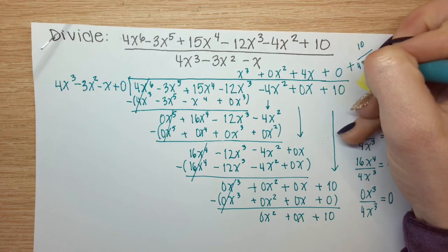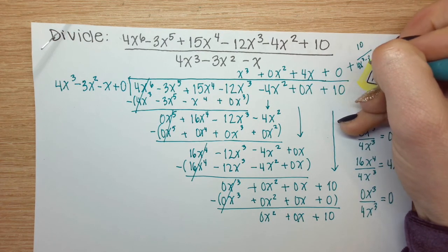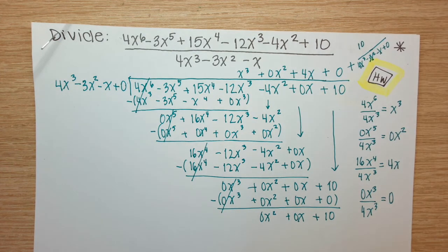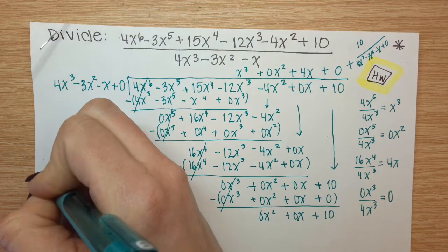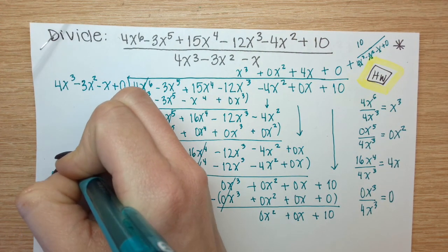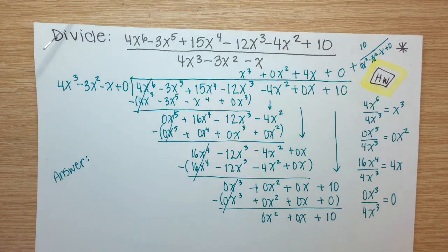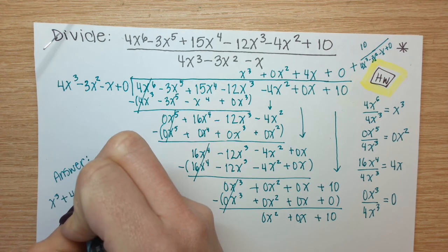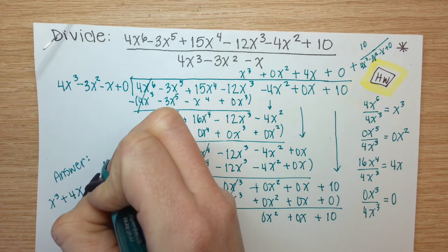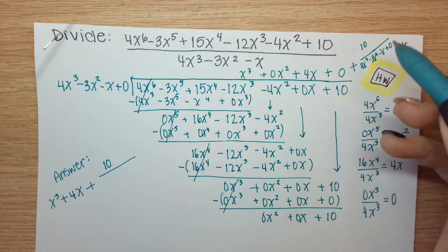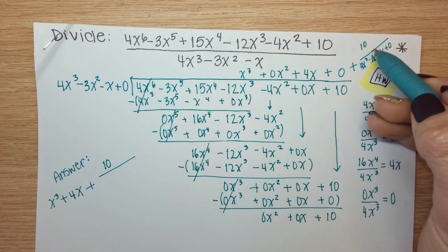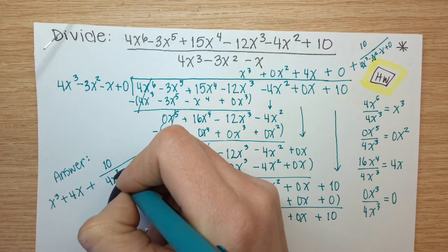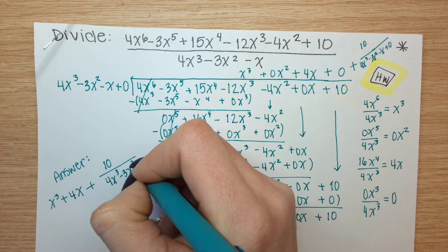I'll write this answer over on the side, 4x to the 3rd minus 3x squared minus x. I guess I could put plus 0 at the end, and if I write my answer over here without all the additional zeros, what would that look like? x to the 3rd plus 4x plus 10 over, and again, this whole thing could have been the numerator. I just didn't have that much room.